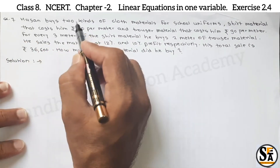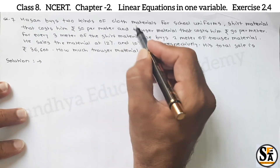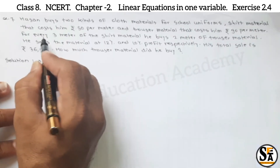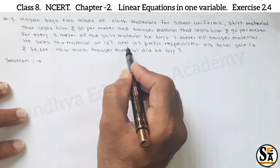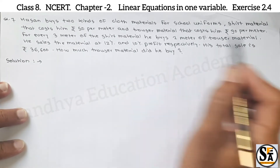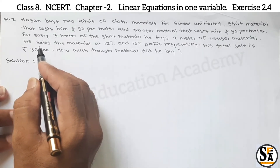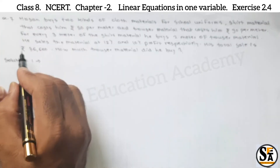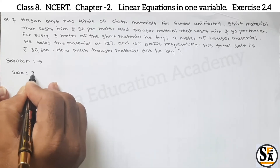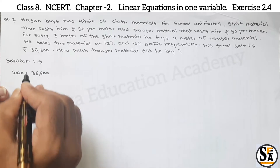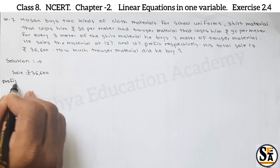Question number 7: Hasan buys two kinds of cloth materials for school uniforms. Shirt material costs Rs 50 per meter and trouser material costs Rs 90 per meter. For every 3 meters of shirt material, he buys 2 meters of trouser material. He sells the material at 12% and 10% profit respectively. His total sale is Rs 36,600. How much trouser material did he buy? In the question, different things are given. Sale is Rs 36,600. The ratio of shirt material to trouser material is 3 is to 2.